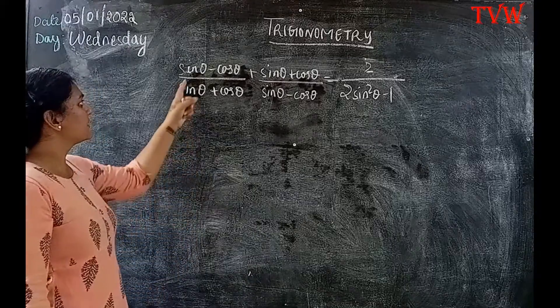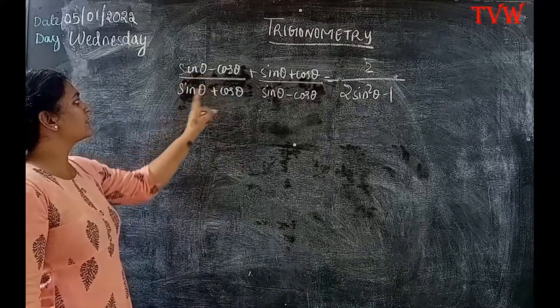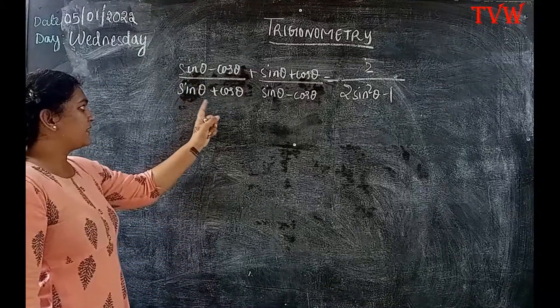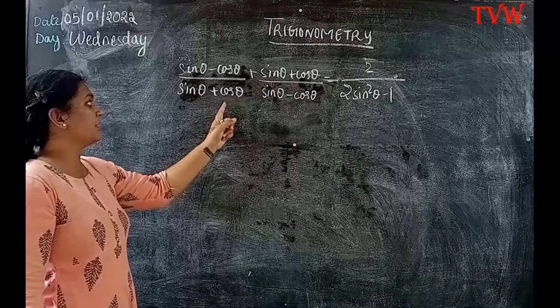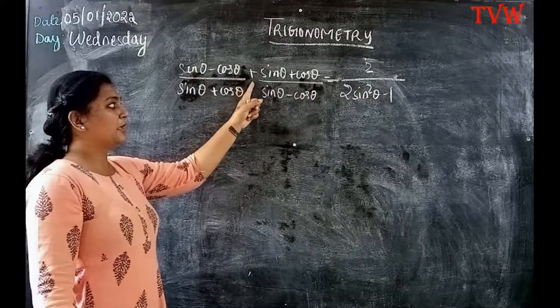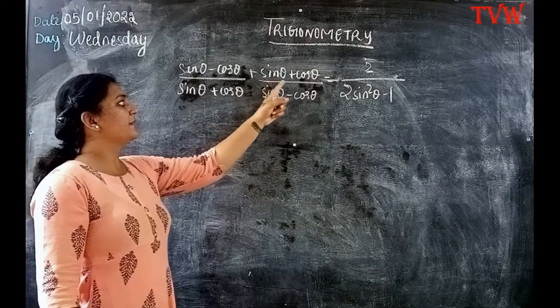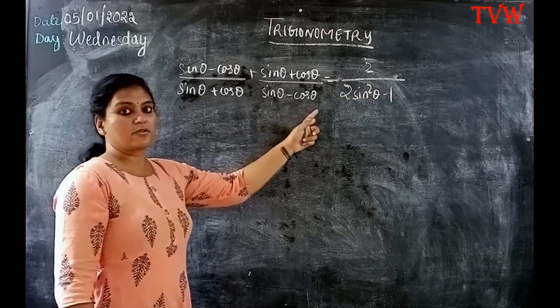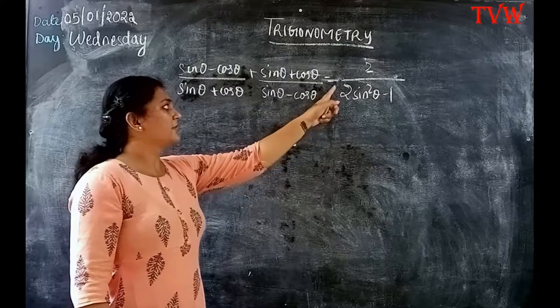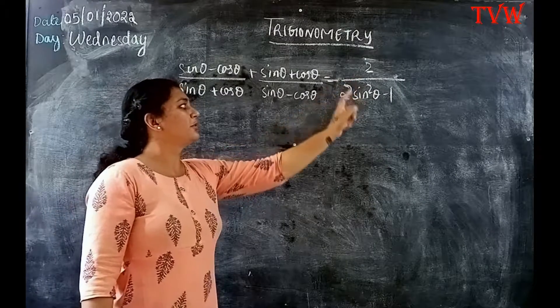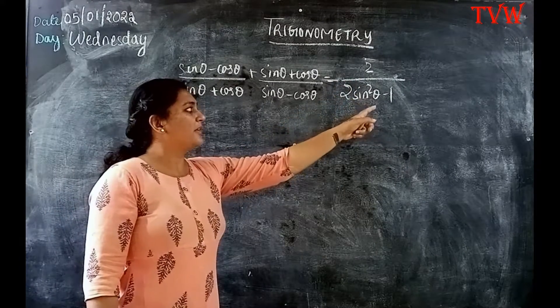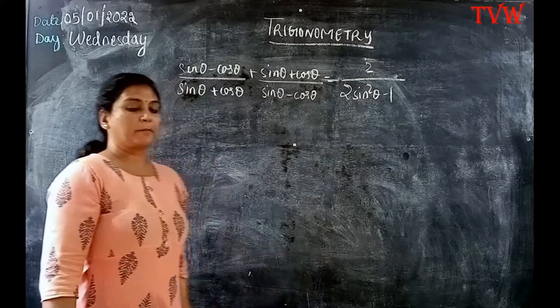The question is: (sin θ − cos θ) / (sin θ + cos θ) + (sin θ + cos θ) / (sin θ − cos θ) = 2 / (2 sin²θ − 1).